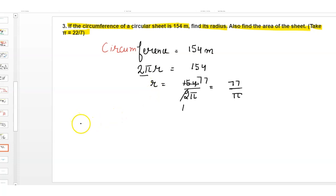Now next we have to find the area of the sheet. Area of circle is equal to πr². First, we write π times r. r is 77 upon π. It is squared.